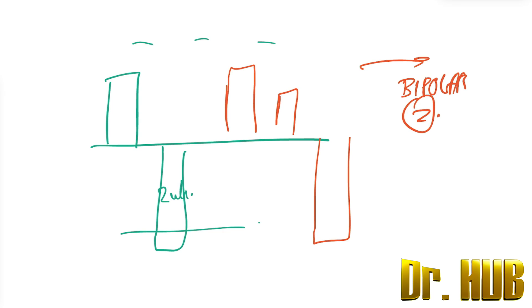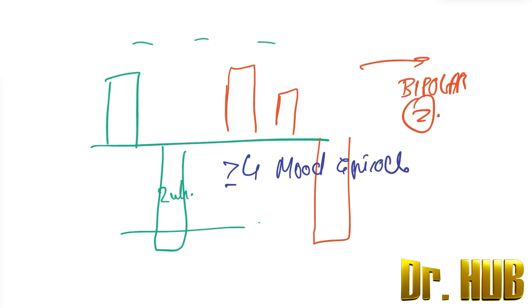There will also be rapid cycling in bipolar type 1 and type 2, in which four or more mood episodes are present within one year.